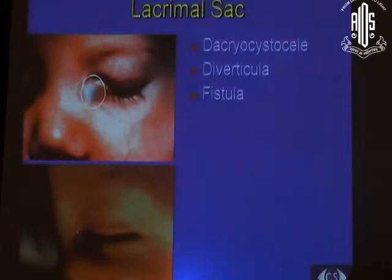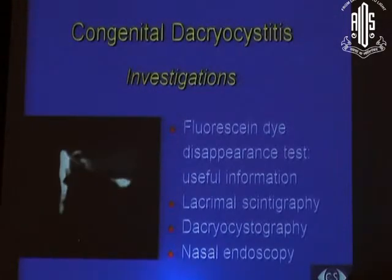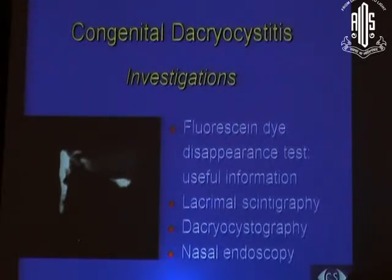Fistula can be highlighted by using a drop of dye; otherwise, it is very difficult to localize in a child. Mothers are often the ones who point out the fistula, and putting in a drop of dye can highlight it. For pediatric epiphora, fluorescein dye disappearance test is the key investigation: if regurgitation is negative, put in fluorescein dye and check the child after 3-5 minutes. Retention of a good amount of dye in the tear sac after 3-5 minutes indicates an obstructive cause.